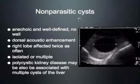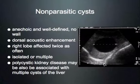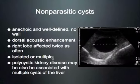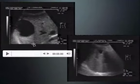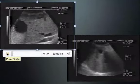The most common focal finding in the liver is probably the non-parasitic dysontogenetic cyst. This is anechoic, well-defined, has no wall, is completely black, usually round, and has the artifact of dorsal acoustic enhancement. The right lobe is affected twice as often. They may be isolated or multiple. Patients with polycystic kidney disease often also have multiple cysts of the liver.